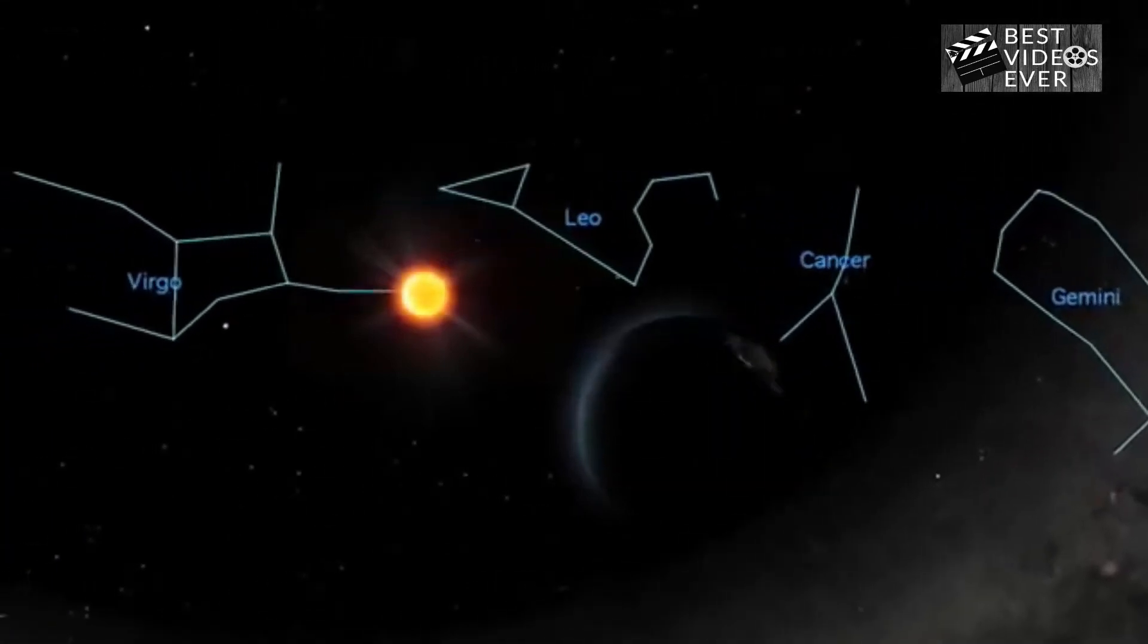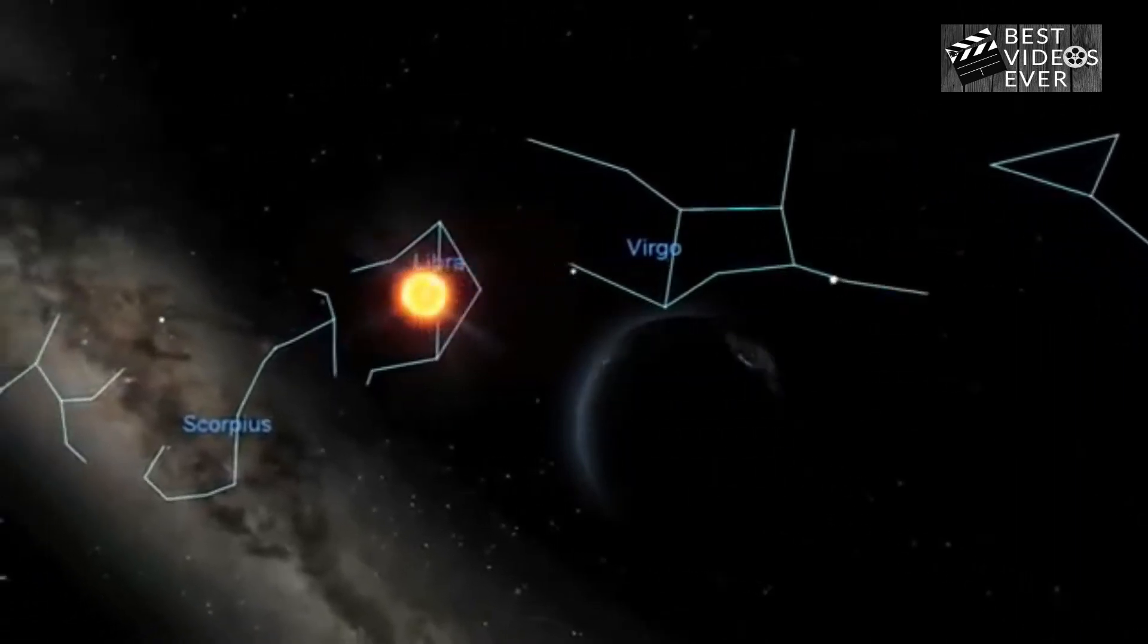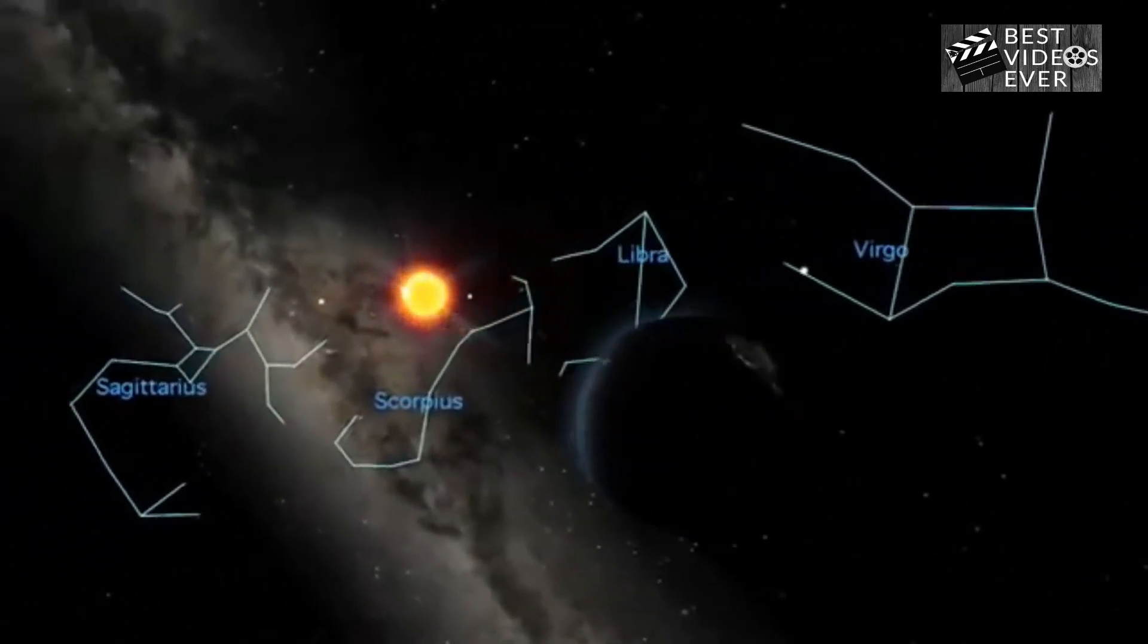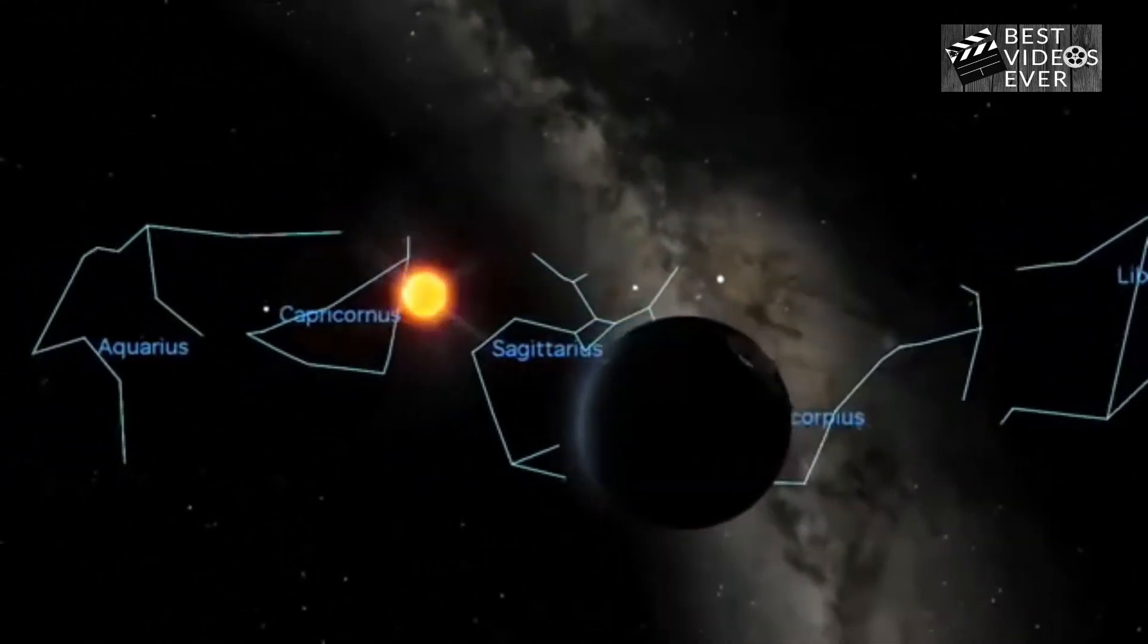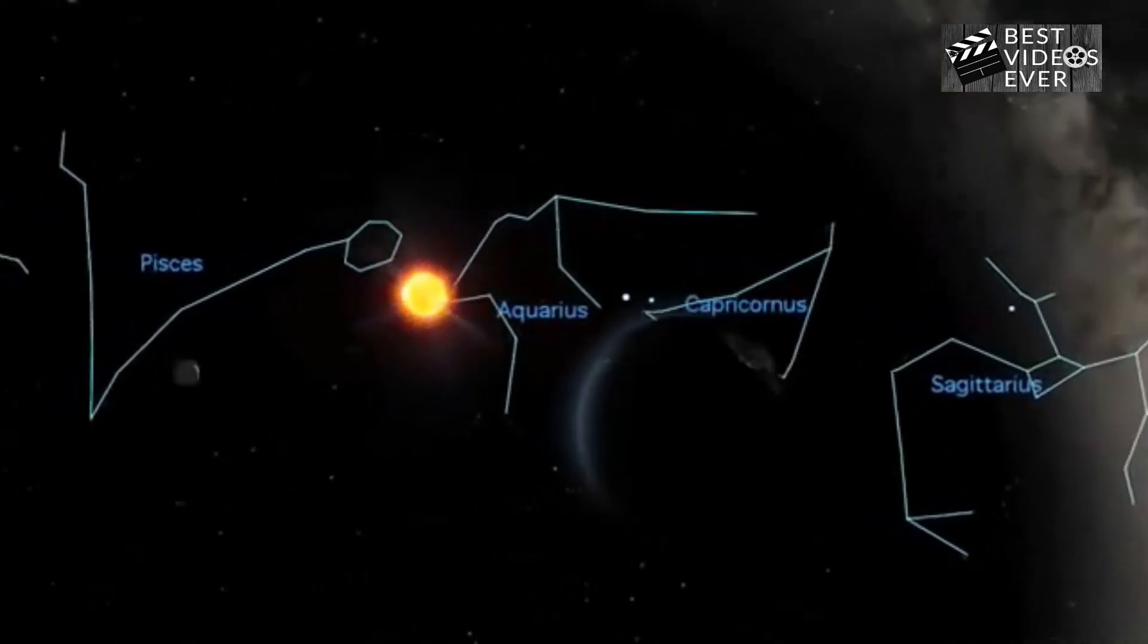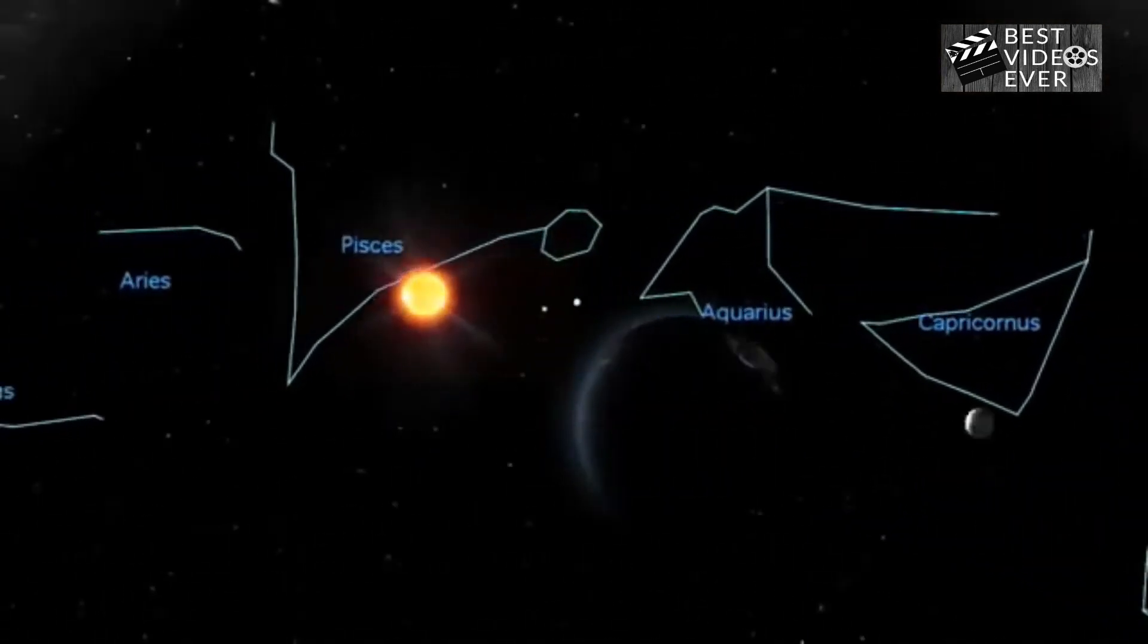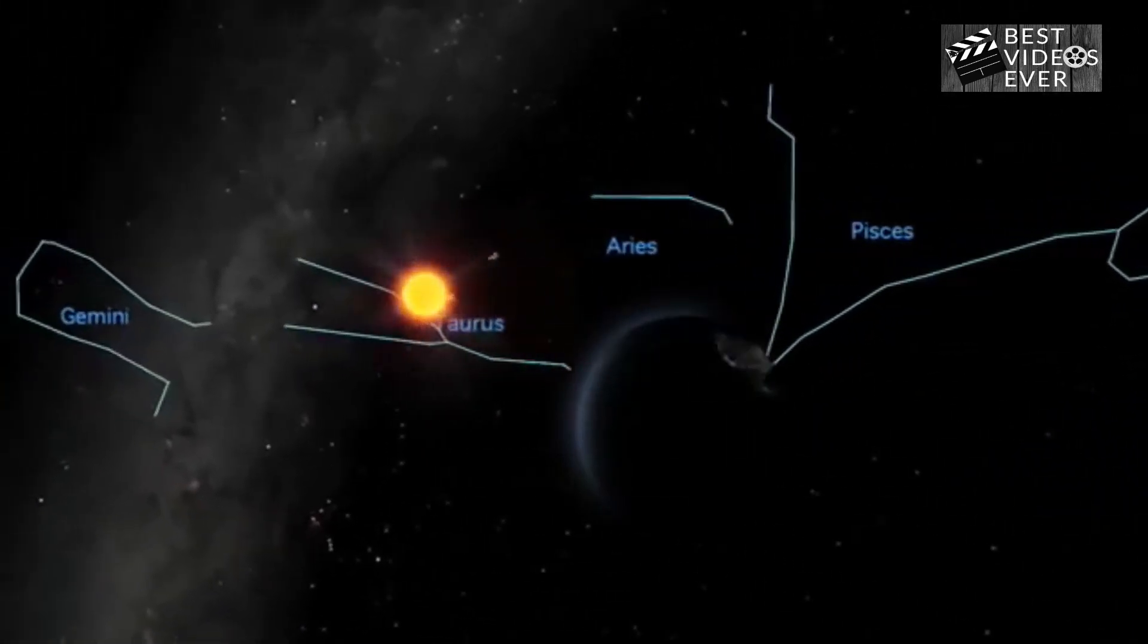Well, one way, called a sidereal year, measures our orbit against the distant stars. As viewed from the Earth, our orbit causes the Sun to appear to move through the constellations of the zodiac on a path called the ecliptic. And when the Sun returns to its starting point, a sidereal year has passed.